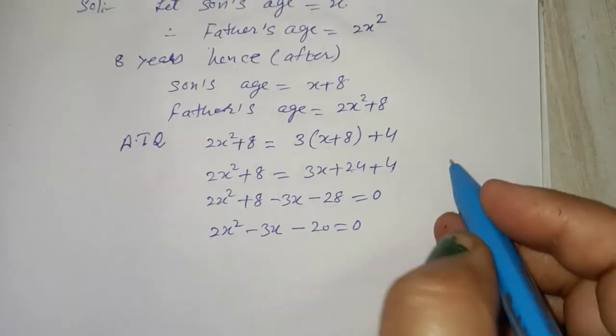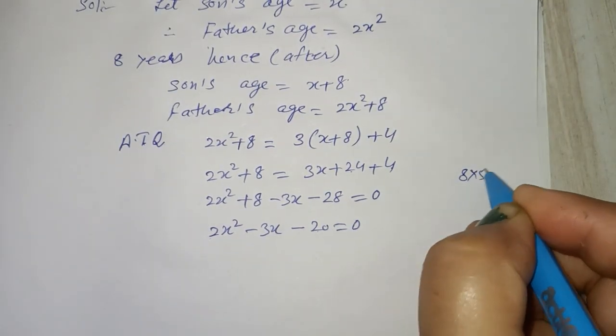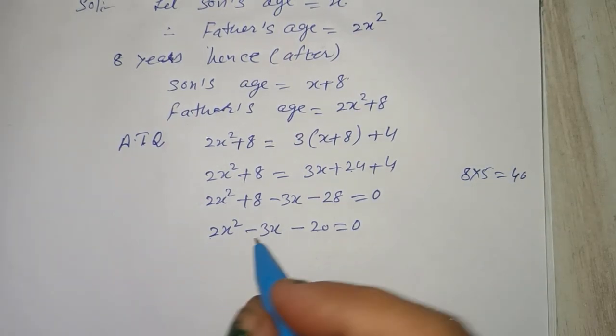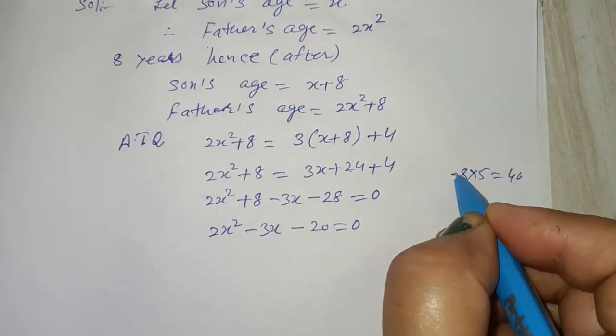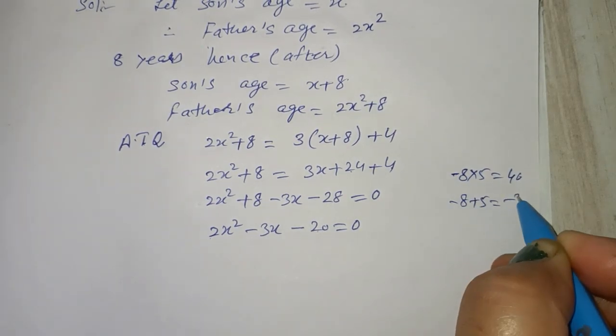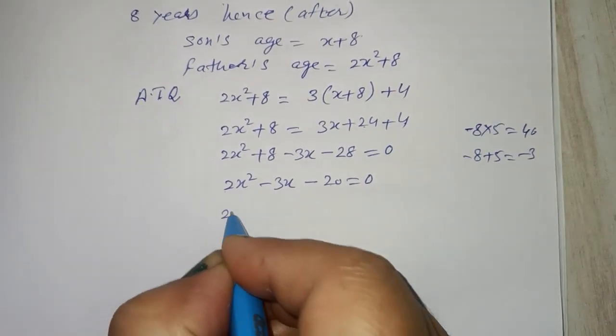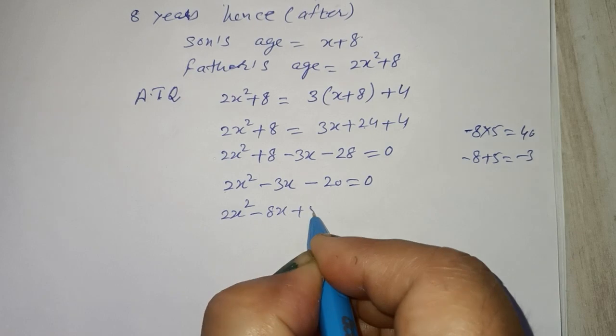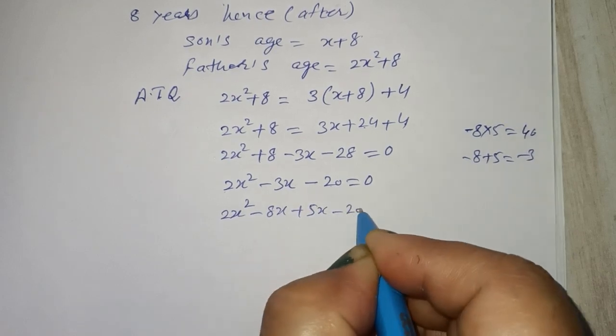Now 8, 5 are 40. I need negative sign, so larger one negative. Minus 8 plus 5 is equal to minus 3, use this.